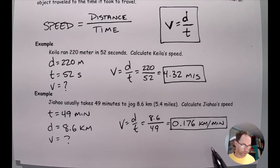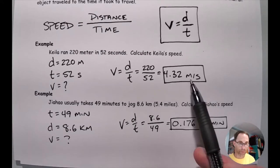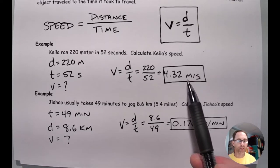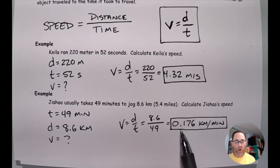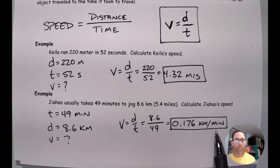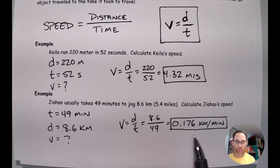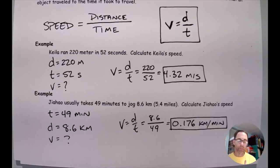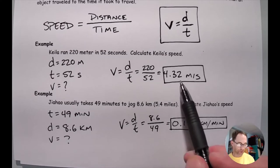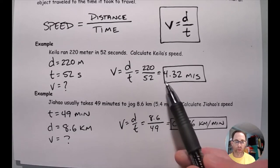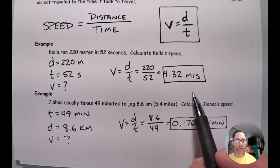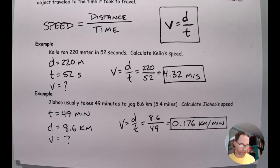That's how you calculate speed, and the reason it allows us to make comparisons: Kila's 4.32 meters per second means 4.32 meters in every one second. Jahau's 0.176 kilometers per minute means 0.176 kilometers in every one minute. If you gave me somebody else's speed also in kilometers per minute, we'd be making a fair comparison because the time unit is the same — one minute. So it comes down to the distance portion. But this formula is more powerful than this — besides calculating speed, we can also find distances and times.